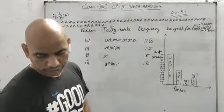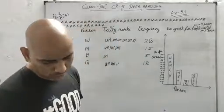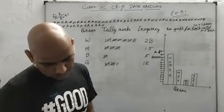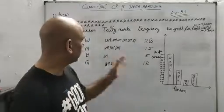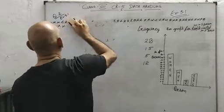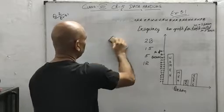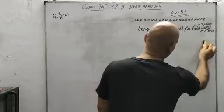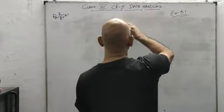Question number 2 is done. Now in question number 3 there are the weekly wages of 30 workers given. He is asking you to first make a tally marks table and then draw the histogram for it. This time we will have to draw the histogram because the wages are continuous data. He is asking us to make a grouped frequency distribution table.